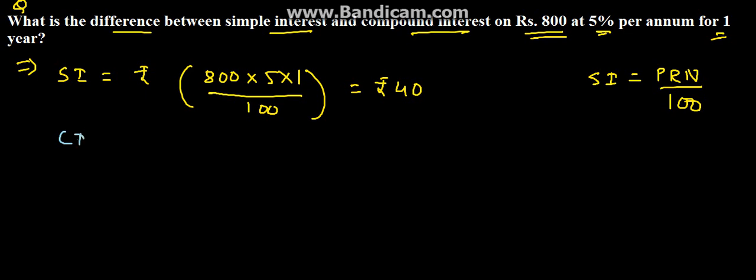Now, compound interest. Compound interest will be equal to Rs. 800, the principal amount, into 1 plus R (the rate) upon 100.